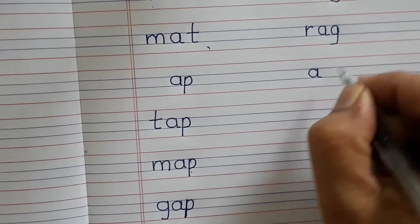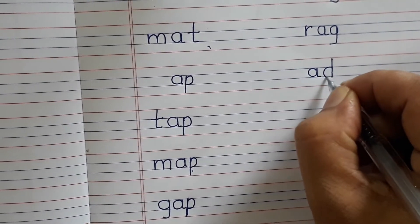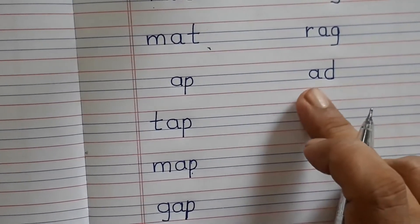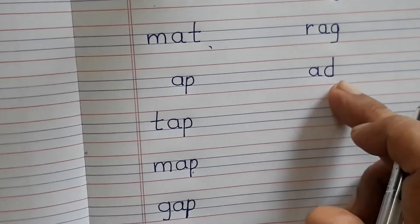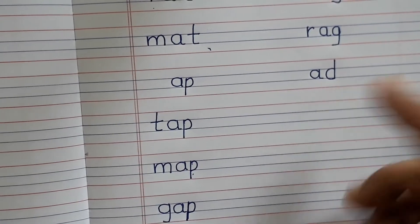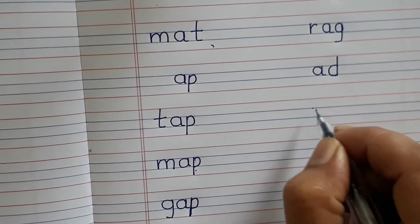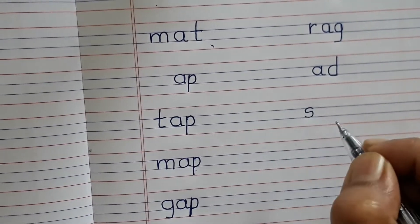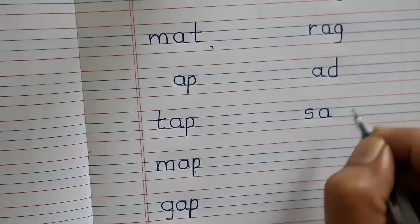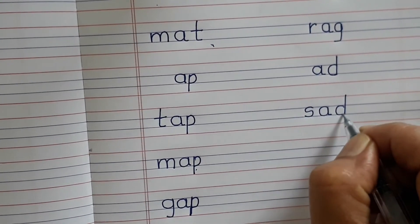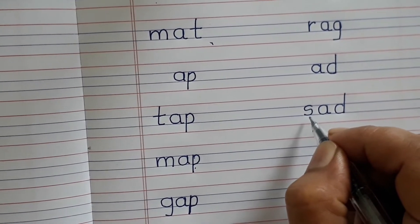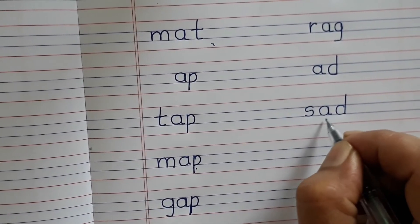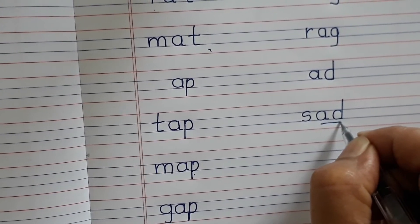A-D. A-D. A says A, D says D. A-D. S-A-D. S sound S. S is S. S-A-D, sad.